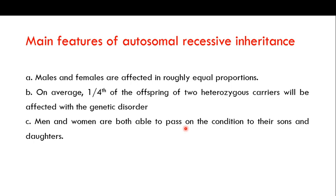Both men and women are able to pass on the condition to their sons and daughters. You can expect skipping of generations — meaning a genetic disease may appear in one generation, then the next generation may show no affected individuals (only carriers), and the disease reappears in the third generation.